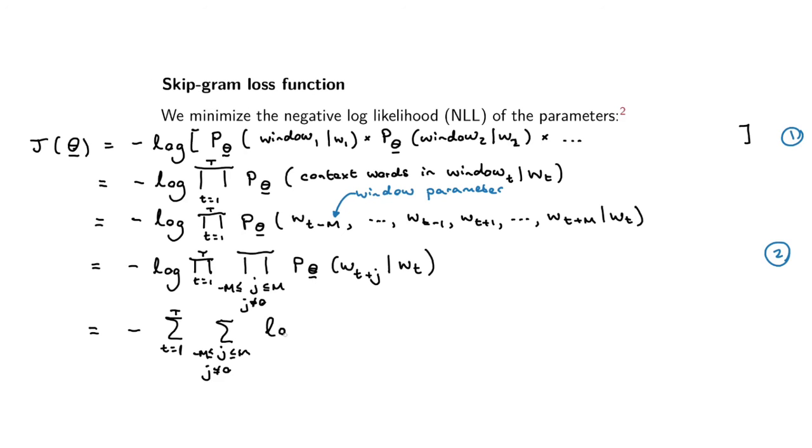Then we've got j going from minus m to m, not equal to zero because we don't want wt given wt. And then we've got the log of p of theta with wt plus j given wt. This is the skip-gram loss function.